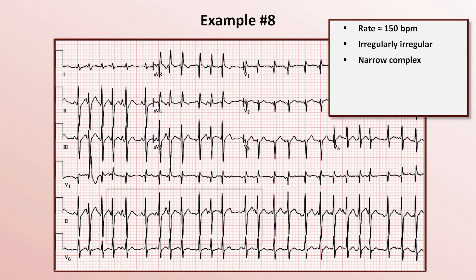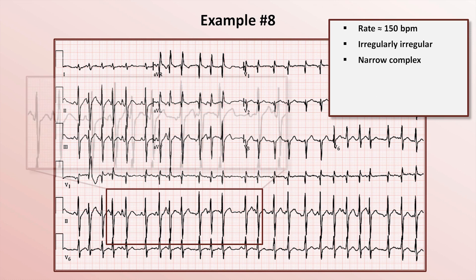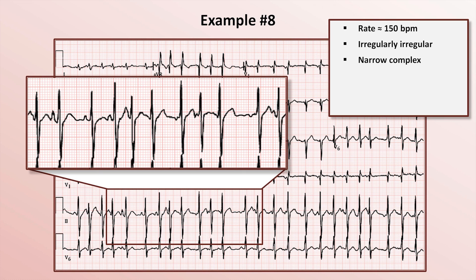Let's zoom in on lead 2 in the rhythm strip. There is clearly a small, discrete waveform before most of the QRS complexes. These are P-waves, but there are many different morphologies, and no one morphology seems to be particularly predominant.